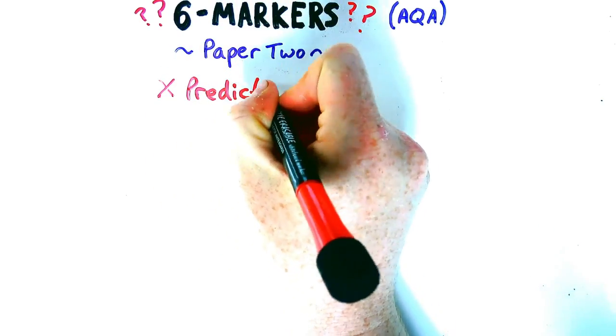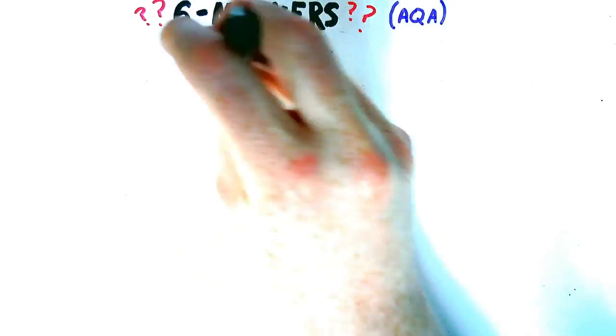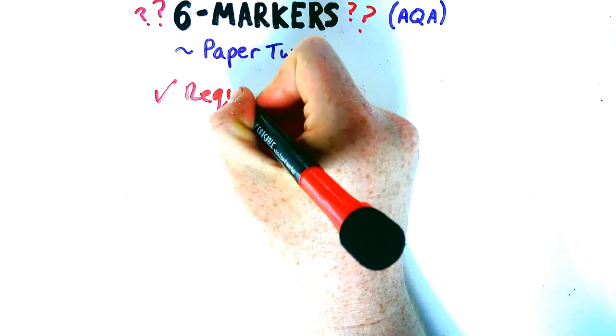GCSE Physics Paper 2, six markers. As always, don't rely on predictions, but learn what's come up in previous years.